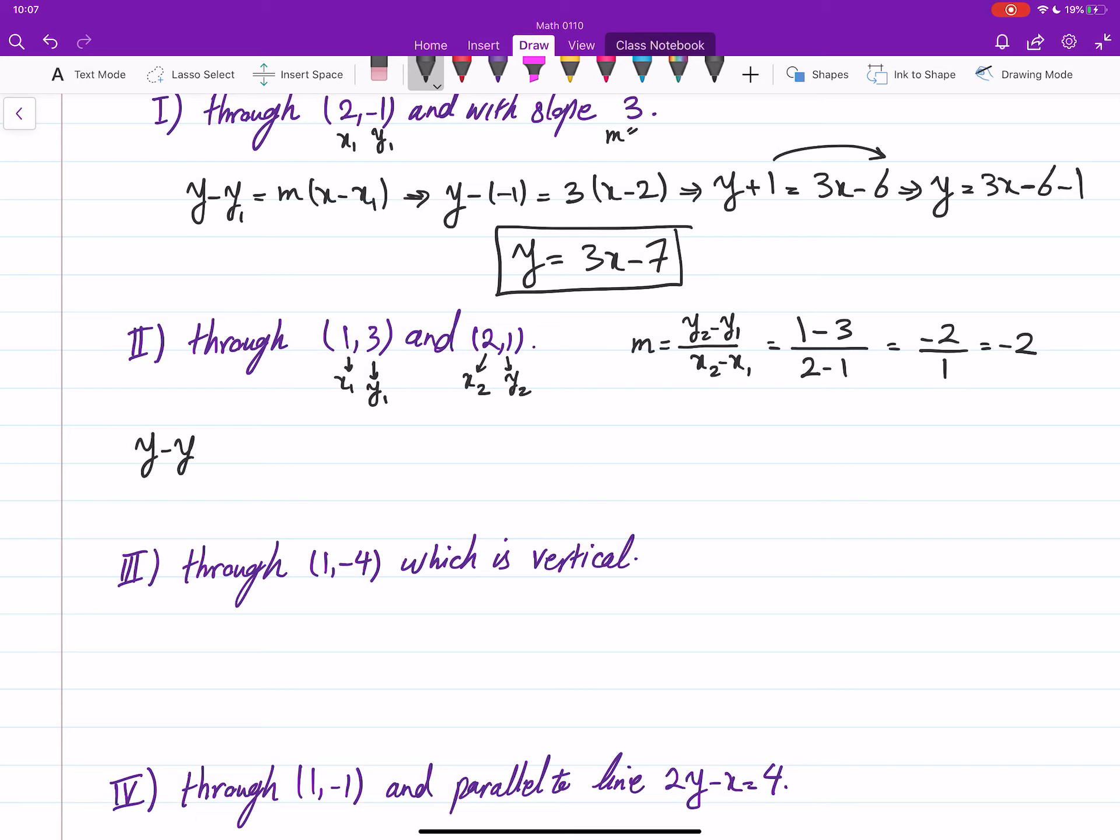Now that I have a slope, I can write this. And this says y minus 3 equals negative 2 times (x minus 1). So this gives us y minus 3 equals negative 2x plus 2. And then I can take the negative 3 to the other side. This will be negative 2x plus 2 plus 3. And that gives us y equals negative 2x plus 5. That's the equation for the line.